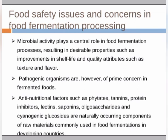Anti-nutritional factors such as phytates, tannins, protease inhibitors, lectins, saponins, oligosaccharides, and cyanogenic glucosides are naturally occurring components of raw materials commonly used in food fermentation in developing countries. Food safety for microbes is a major consideration in industries where texture, flavors, and shelf life are enhanced using different types of microbes.